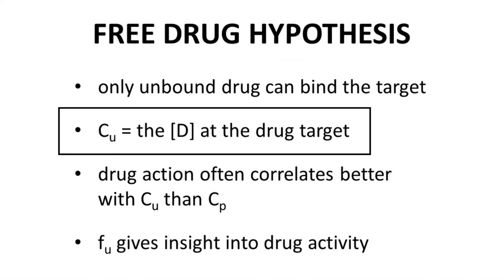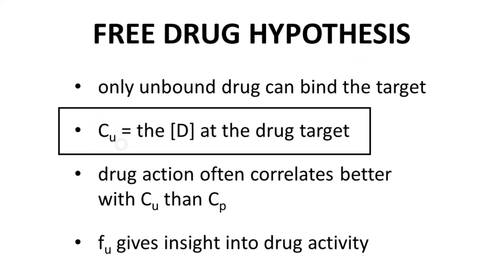When we think about drug target binding, only the unbound drug can bind to the intended target, because drug that is bound to a plasma protein cannot also bind to the target. The free drug hypothesis states that the unbound drug concentration, CU, in the plasma is equal to the concentration of the drug at the site of the drug target.